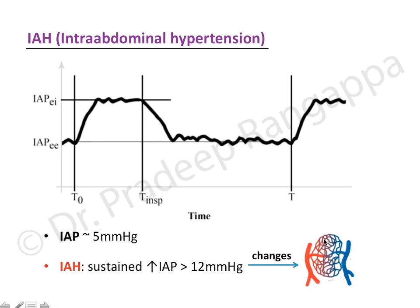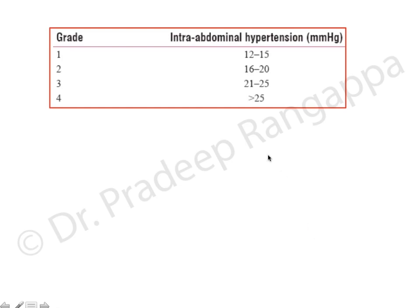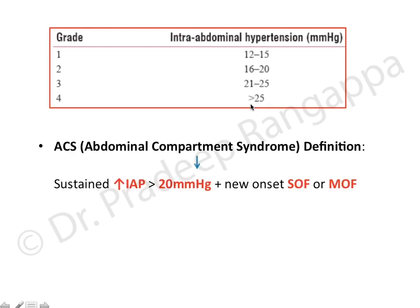These are the grades of intra-abdominal hypertension: Grade 1 is 12–15 mmHg, Grade 2 is 16–20 mmHg, Grade 3 is 21–25 mmHg, and Grade 4 is more than 25 mmHg. Importantly, intra-abdominal hypertension is not equal to abdominal compartment syndrome.